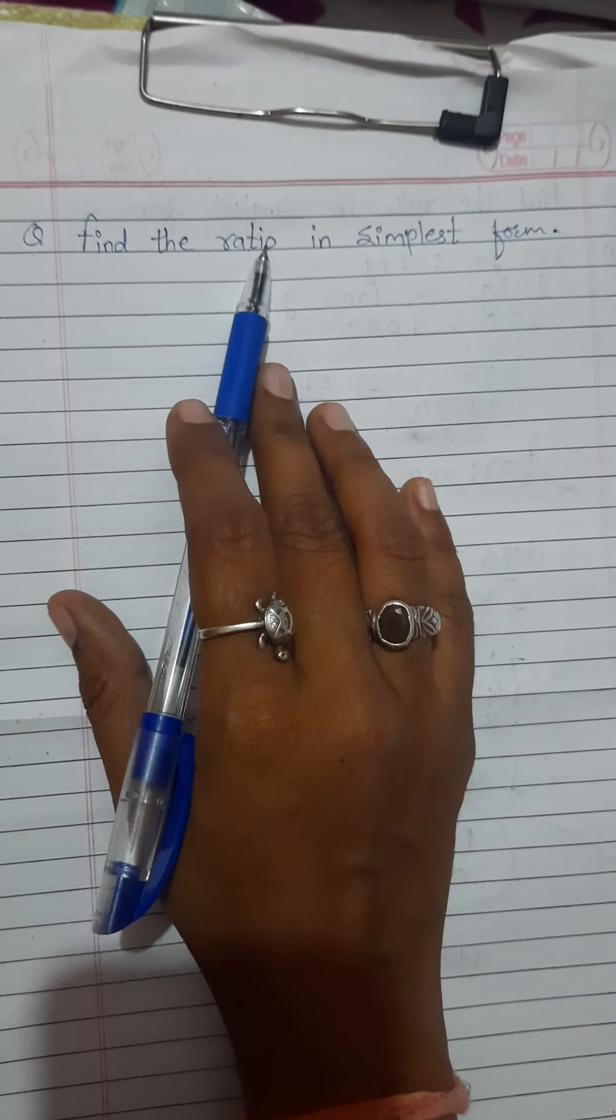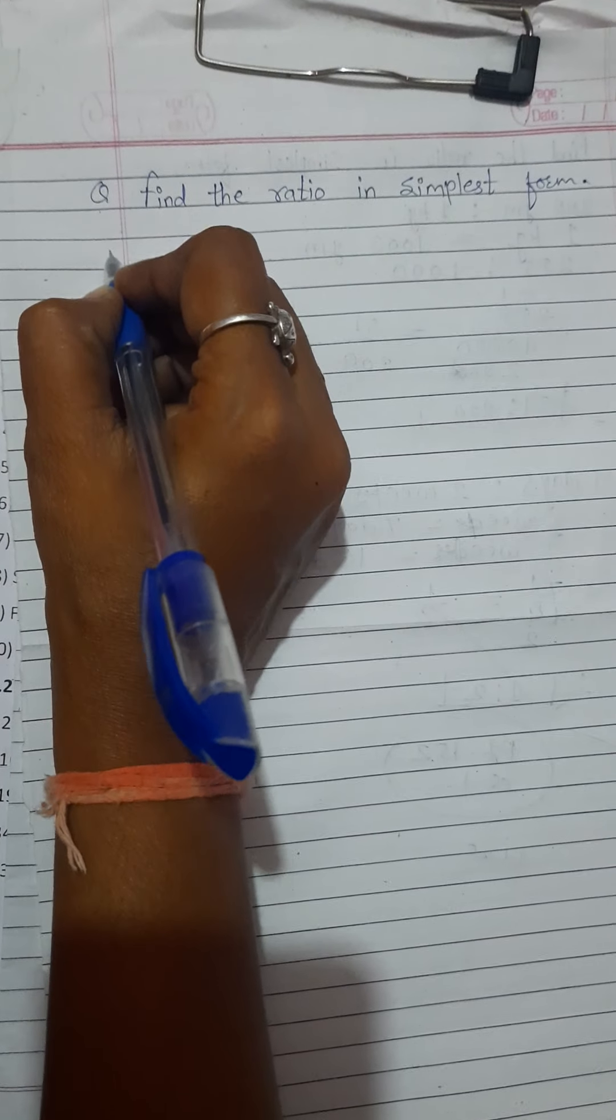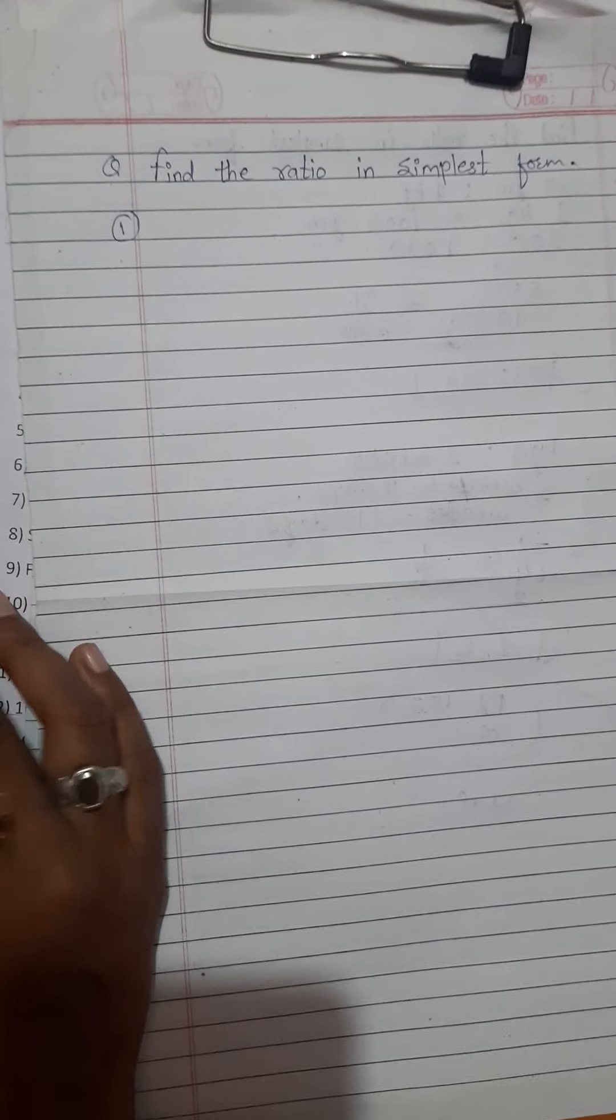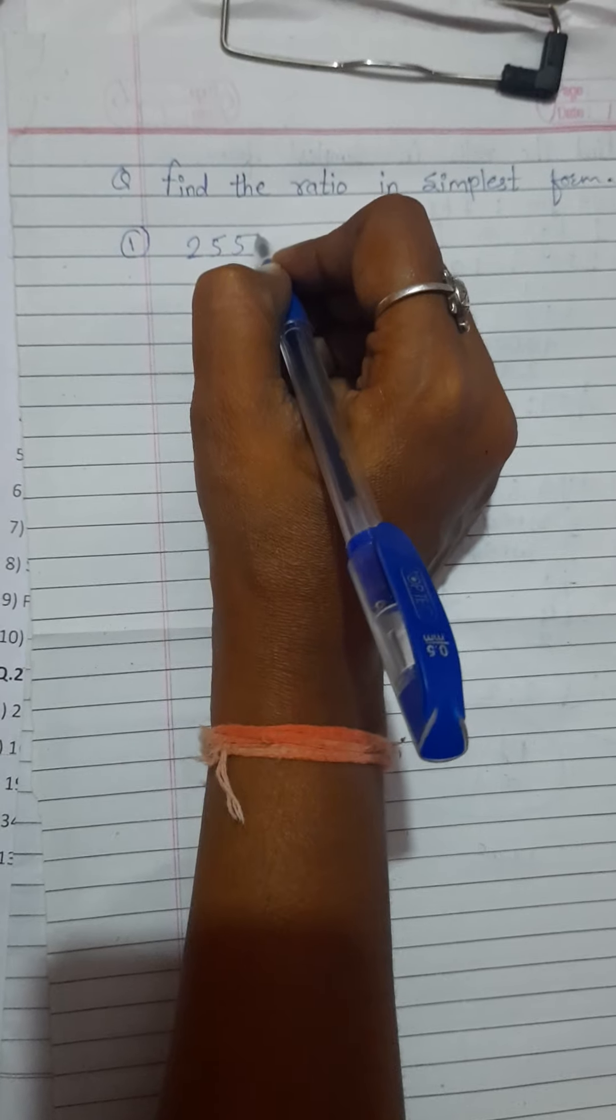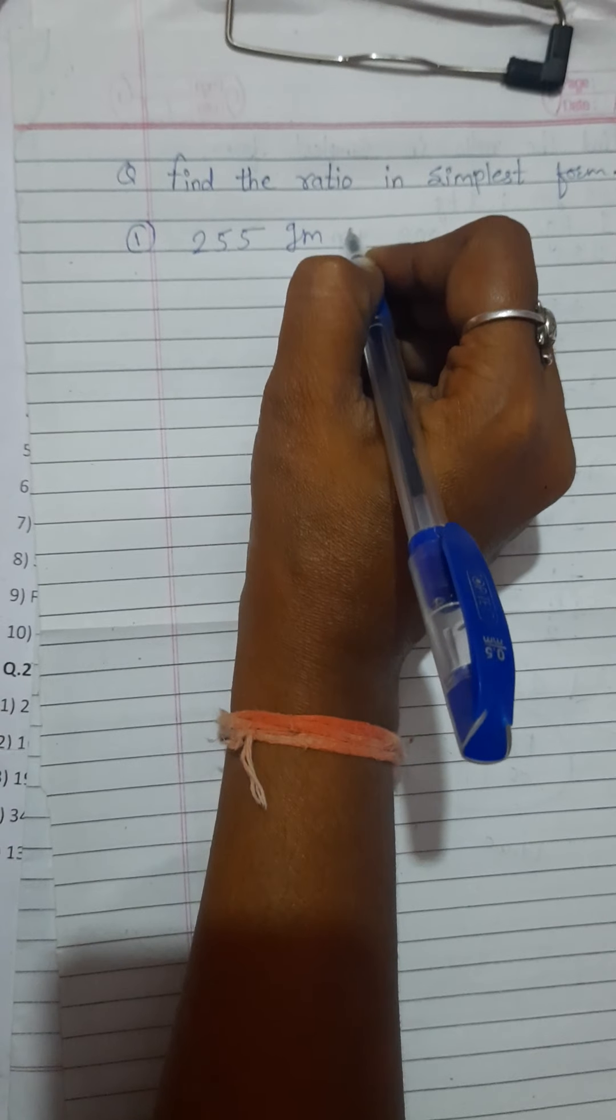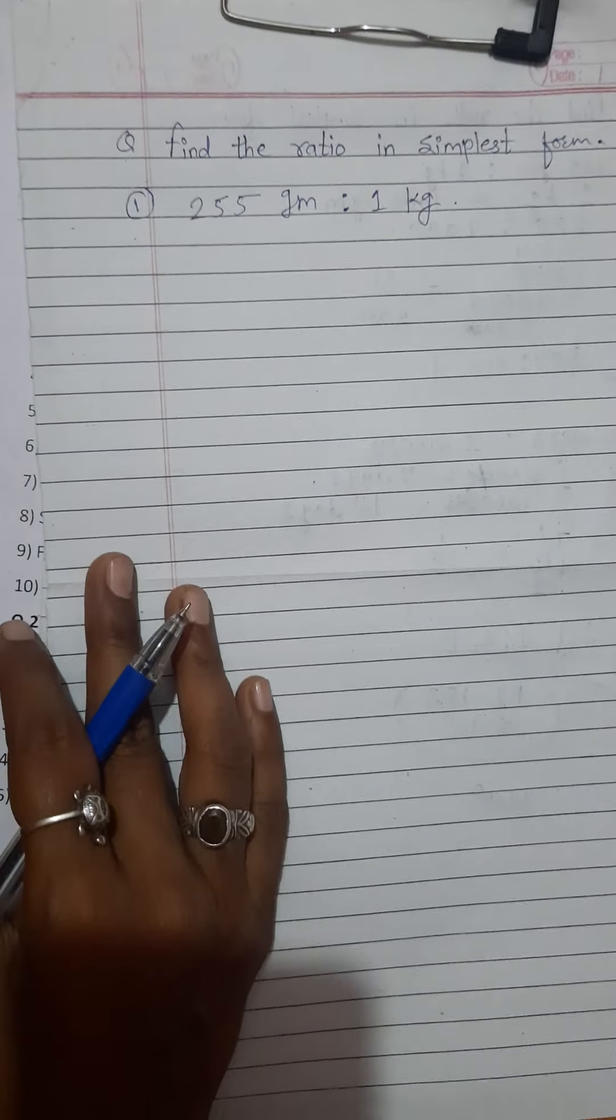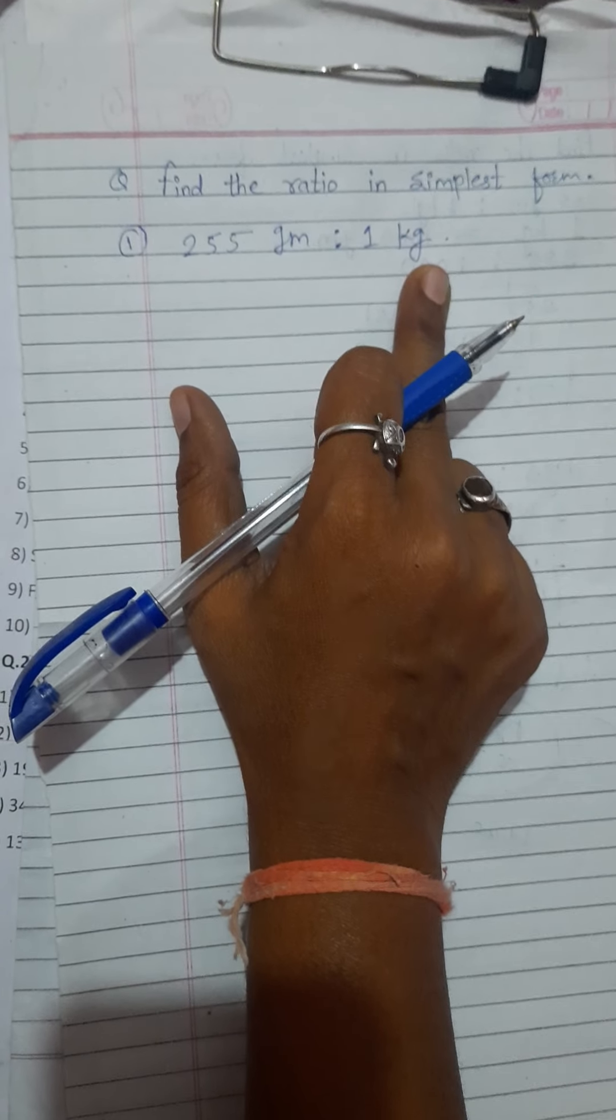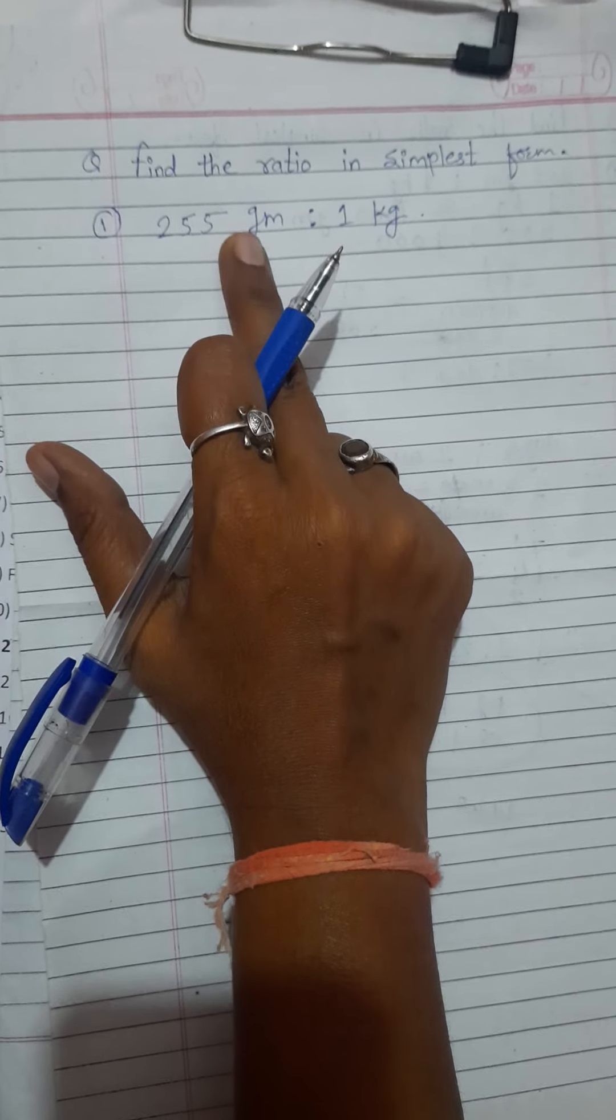Find the ratio in the simplest form. I just write here one example. We just solve here some examples. First example is 255 gram ratio 1 kilogram. Look at here. There is a gram and there is a kilogram. Now, it is important you just convert that kilogram in gram.